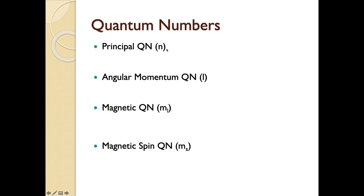What we care about for each quantum number is what piece of information it gives us, and what the allowed numerical values are. These quantum numbers are all whole numbers of some kind, but for m-sub-l in particular, they can be negative integers. We want to know how these numbers relate to one another, and what they tell us about a particular orbital or electron.